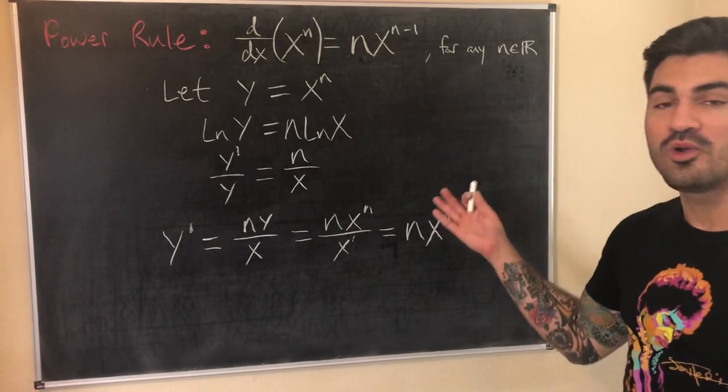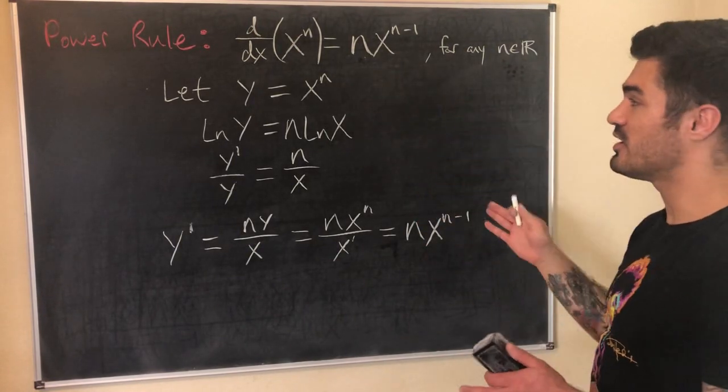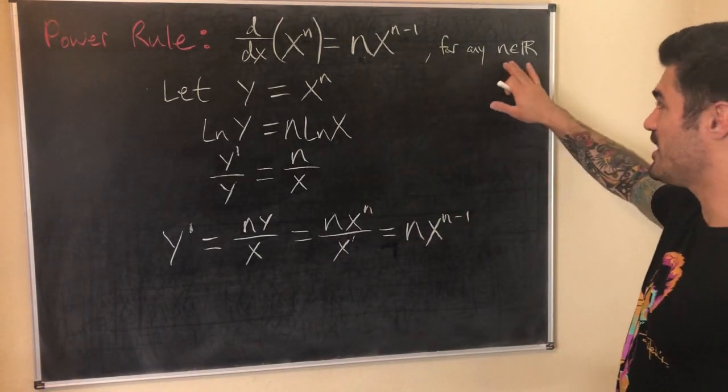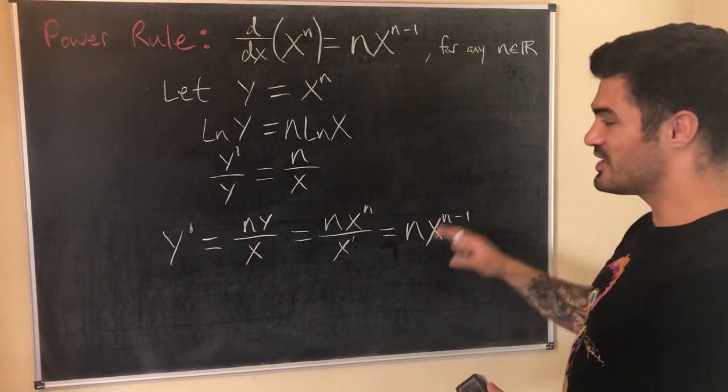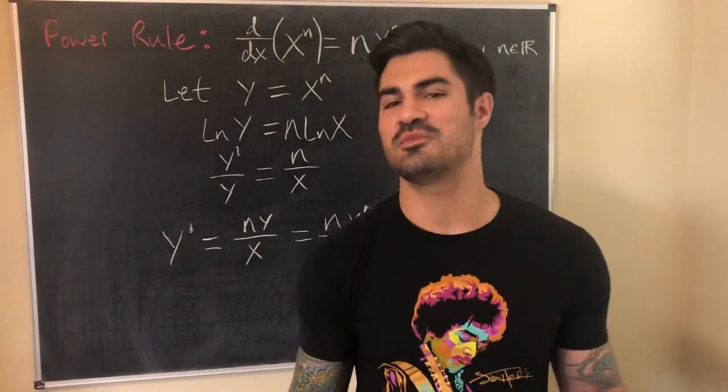So we've shown that y' equals n times x to the n minus 1, which is exactly what we wanted to show. And we didn't need to put any restrictions on n. It was an arbitrary constant real number. So this is the proof for the power rule, the general proof for any n in the real numbers. But I still thought the first one was fun. So I thought I'd throw it in here.